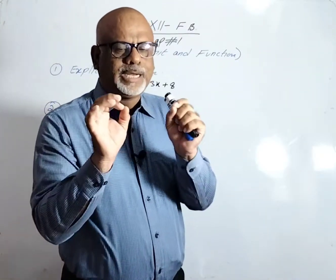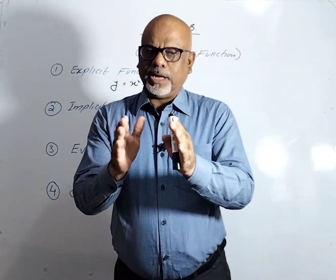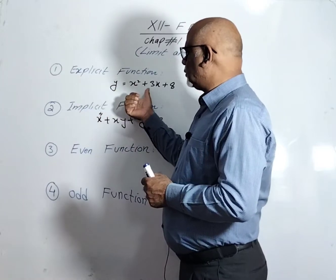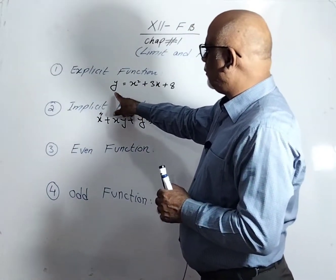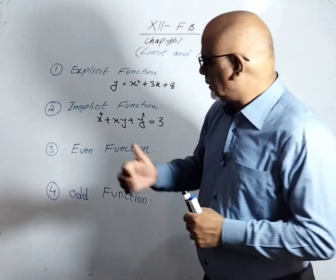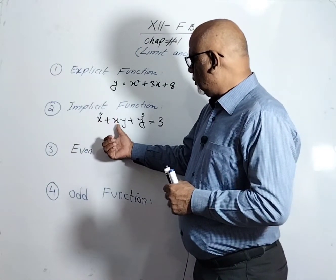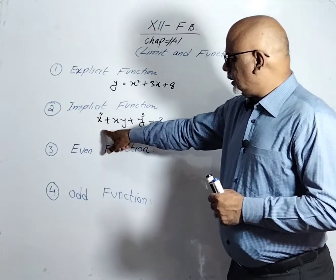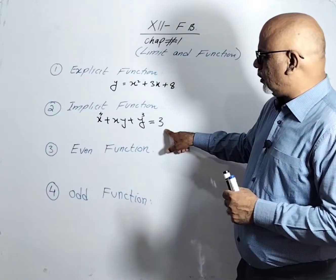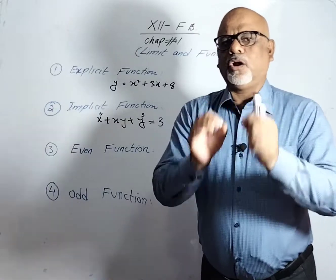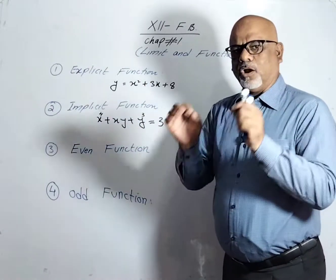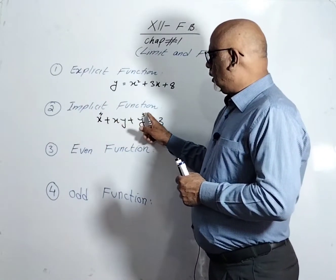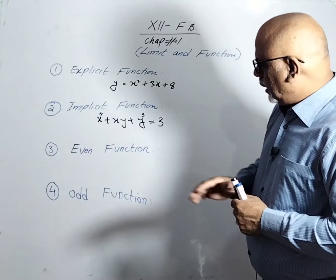Now come to the implicit function. An implicit function is that type of function in which x and y are so mixed with each other that we cannot separate y in the form of y = f(x). The given example is x⁴ + xy + y³ = 3. In this function, y cannot be separated in the form of f(x), so this type of function is called an implicit function.